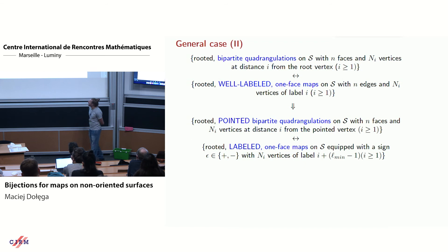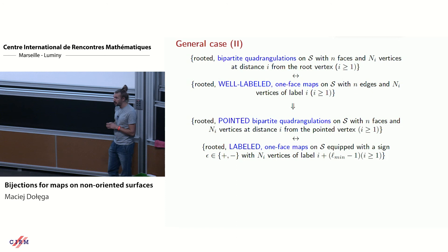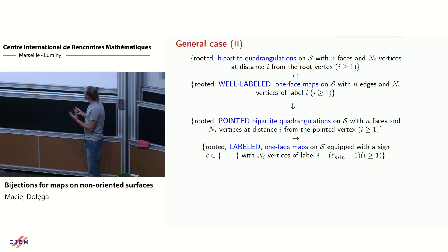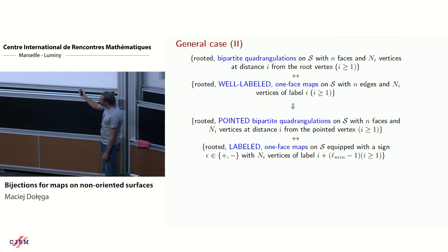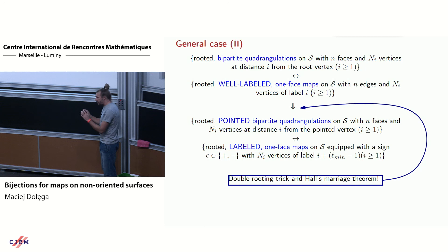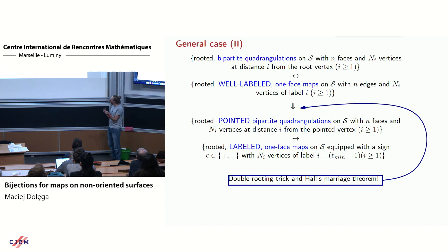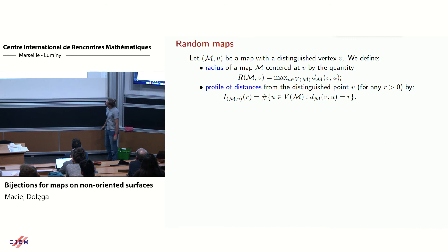It's actually more convenient to have a bijection between pointed objects — not just rooted, but also pointed, meaning we distinguish one vertex. This is very important for enumeration: when you have pointed objects, you don't have the constraint that all labels are positive, which is annoying when enumerating. With negative labels, enumeration is much easier. Also for understanding the metric structure of your quadrangulation, it's good to have a bijection where you point any vertex you like. We were able to deduce this pointed bijection, but we used a trick: building several bijections and using Hall's marriage theorem to prove existence.